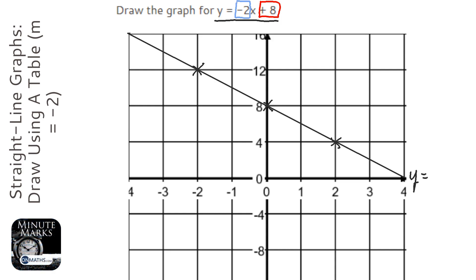You always make sure that the line is for the duration of the graph, and make sure you label it. So that's y equals minus 2x plus 8.